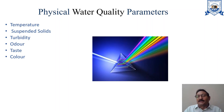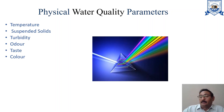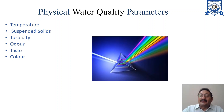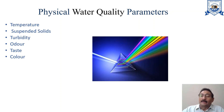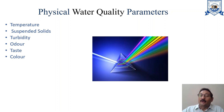In this video lecture, I am concentrating on physical water quality parameters. Physical water quality parameters are those that respond to the sense of sight, sense of touch, sense of taste, and sense of smell — the five senses. These parameters include temperature, suspended solids, turbidity, odor, taste, and color.